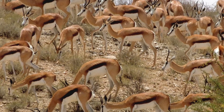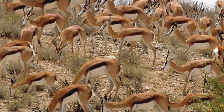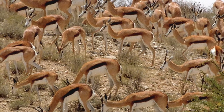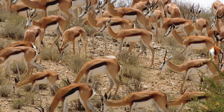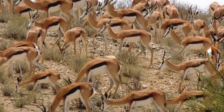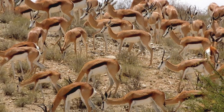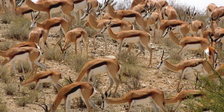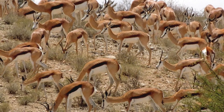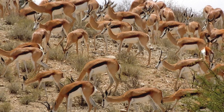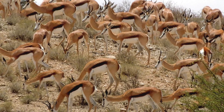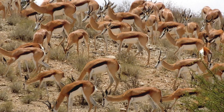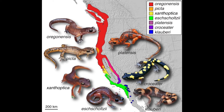Now we need to talk about speciation. A species is a group of similar organisms that can reproduce to give fertile offspring. Speciation is the development of a new species — it occurs when the same species becomes so different that they can no longer breed together to produce fertile offspring.